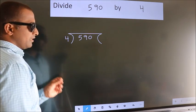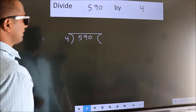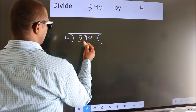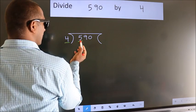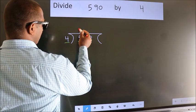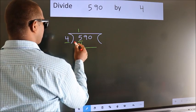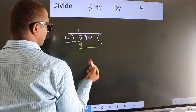This is step one. Next, here we have 5, here 4. A number close to 5 in the 4 times table is 4. Four once is 4. Now we subtract and get 1.